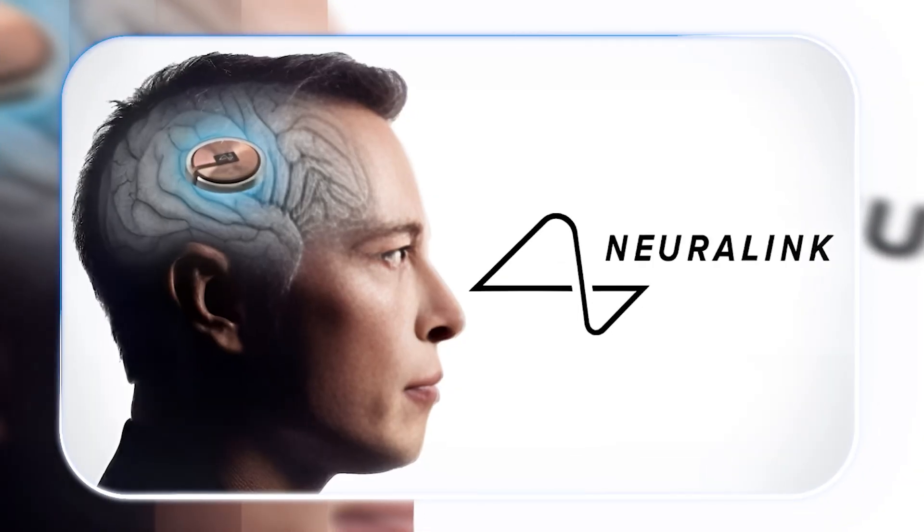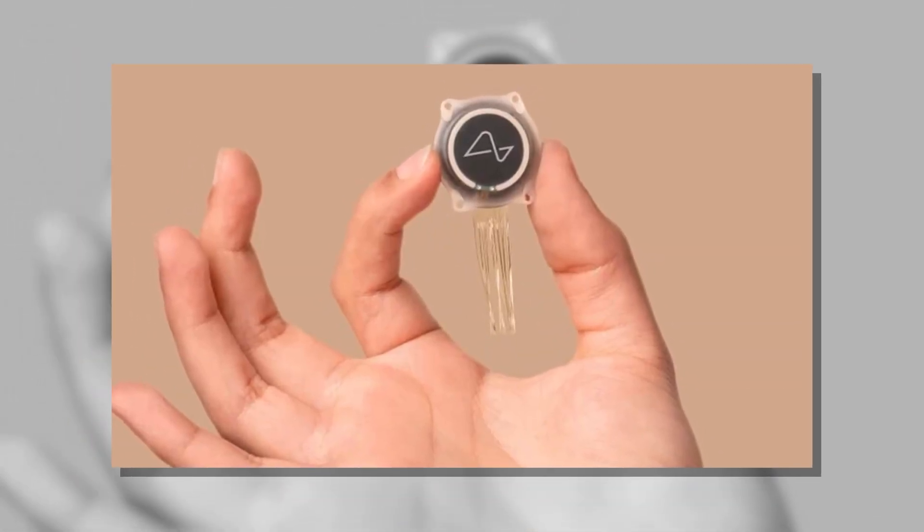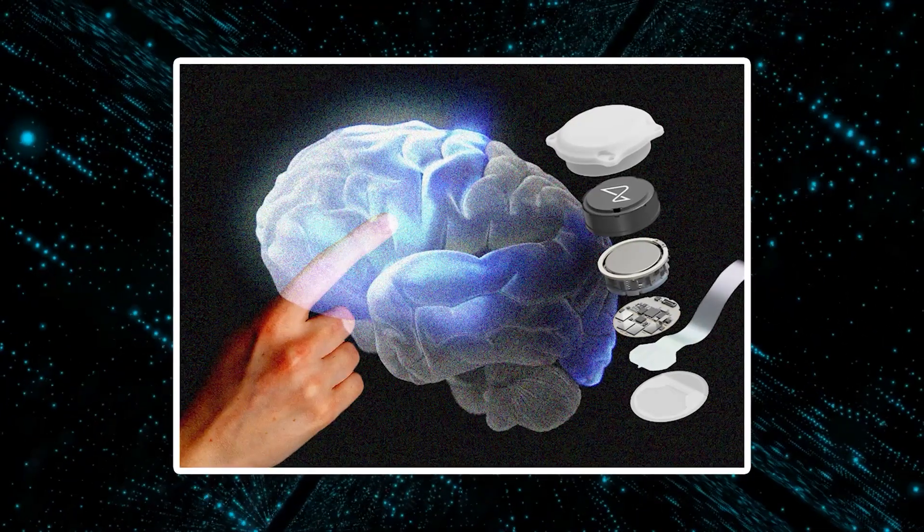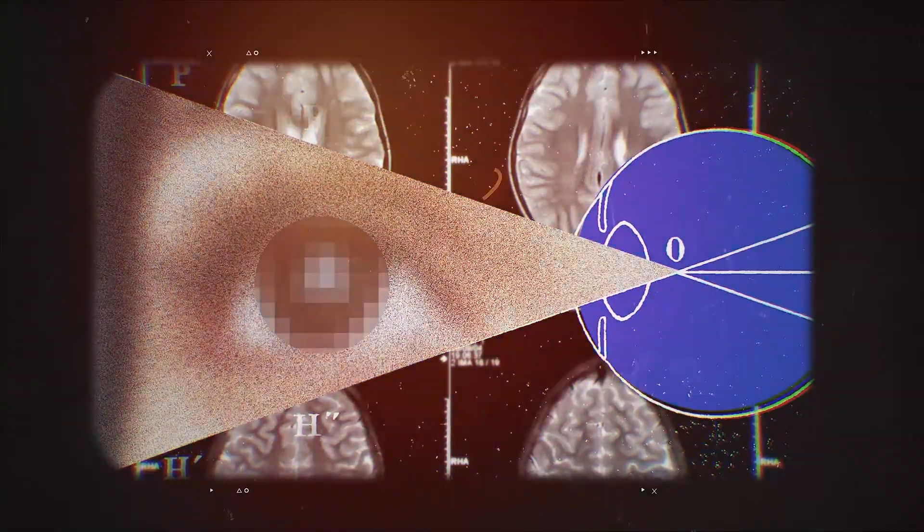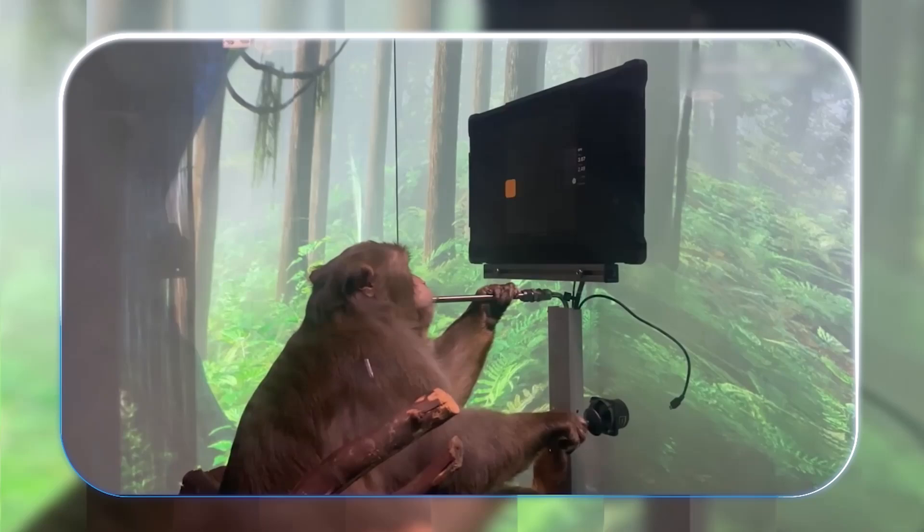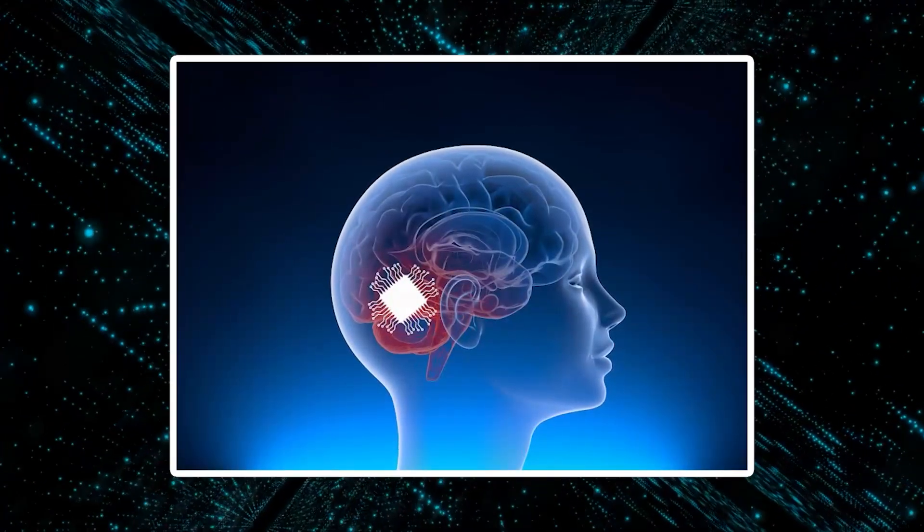Elon Musk recently unveiled Neuralink's most revolutionary project yet, Blindsight, a brain implant designed not just to restore vision, but to expand it beyond natural human limits. In a June 2025 interview, Musk revealed that within the next year, Neuralink will begin human trials for its vision implants, directly stimulating the visual cortex to bypass damaged optic nerves. The technology has already been tested in monkeys, with one subject successfully interpreting visual data for three years. While initial applications focus on restoring basic sight for the blind, Musk's long-term vision is far more radical.